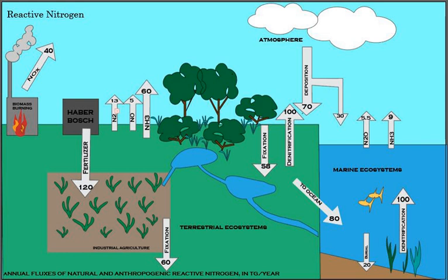The nitrogen cycle is the biogeochemical cycle by which nitrogen is converted into multiple chemical forms as it circulates among atmosphere, terrestrial, and marine ecosystems. The conversion of nitrogen can be carried out through both biological and physical processes. Important processes in the nitrogen cycle include fixation, ammonification, nitrification, and denitrification.